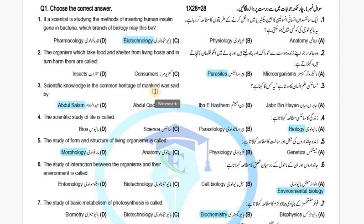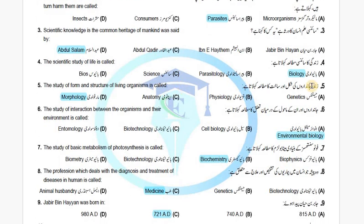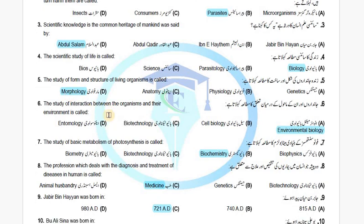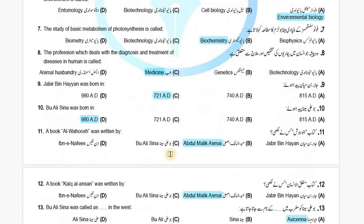Scientific knowledge is the common heritage of mankind — this was said by Abdus Salam; this is a side box in the book. The scientific study of life is Biology. The study of form and structure is Morphology. The study of interaction between organisms and their environment is Environmental Biology.